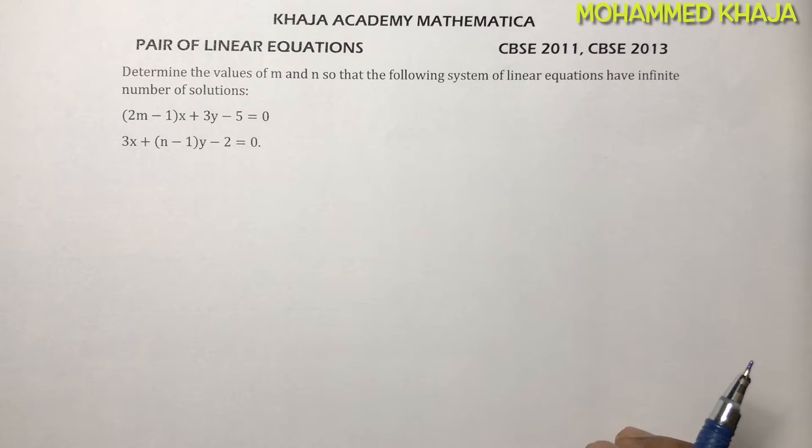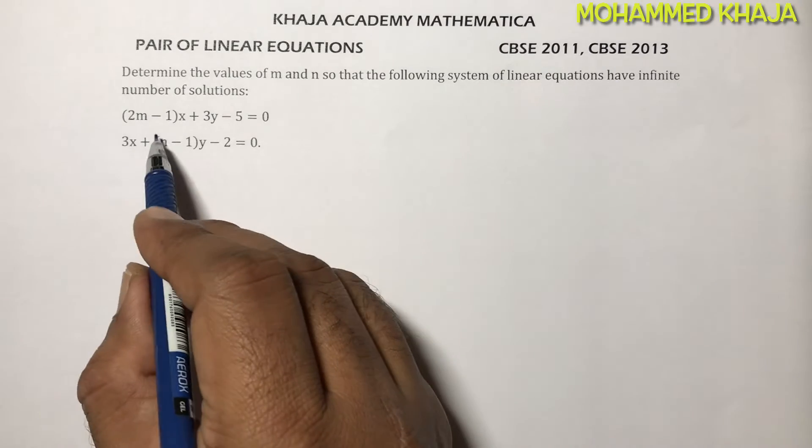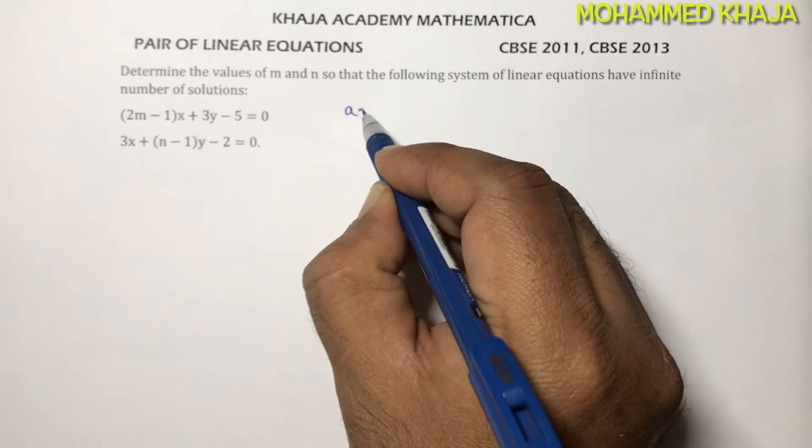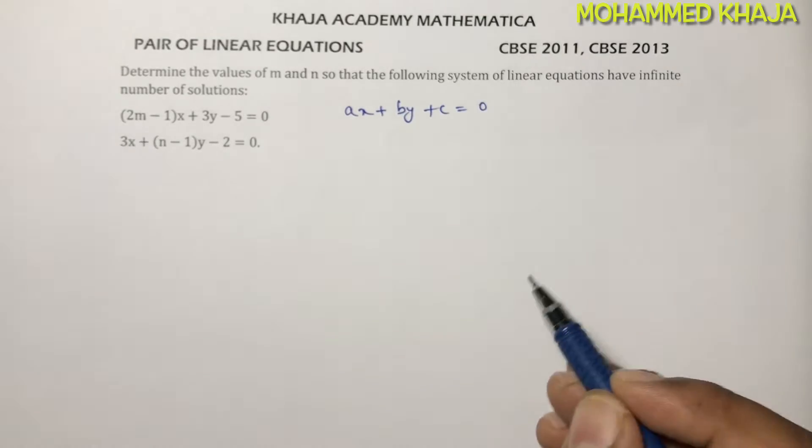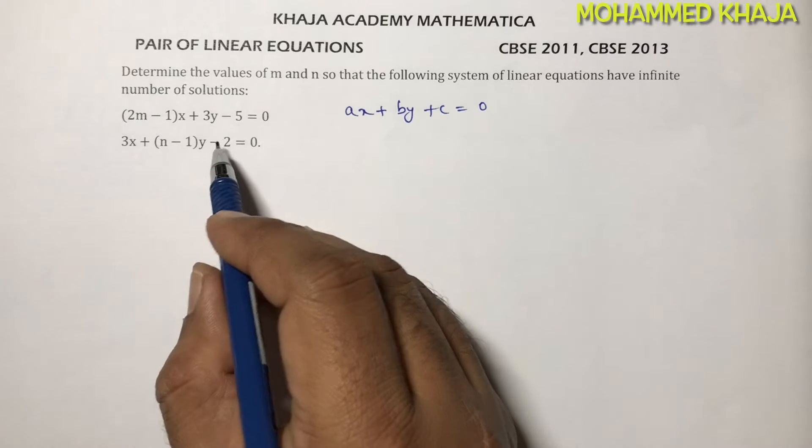Determine the values of m and n so that the following system of linear equations have infinite number of solutions. The equations are already in standard form: ax plus by plus c equals 0. Two equations are here.